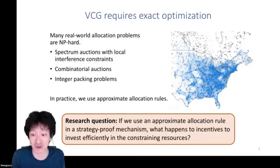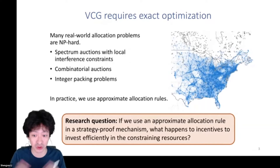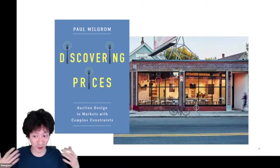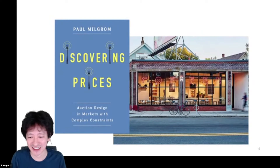So in practice, faced with situations like this, we don't compute the exact optimum — we use various approximate allocation rules. Our research question is: suppose we take one of these approximate allocation rules and use it in a strategy-proof mechanism. What happens to the incentives bidders have to invest efficiently? This comes out of a provocative chapter in Paul's book, Discovering Prices, and a conversation at Broadsheet Coffee in Cambridge.